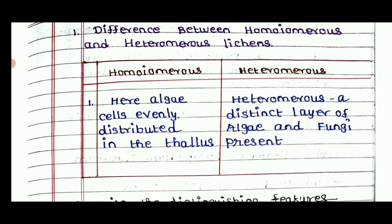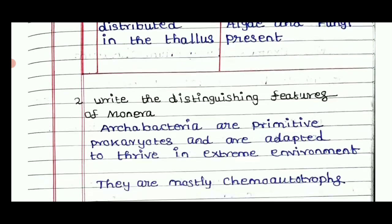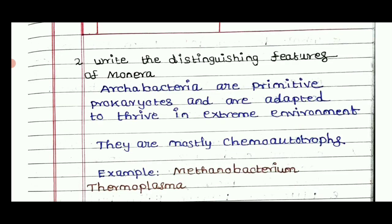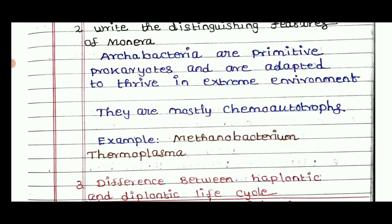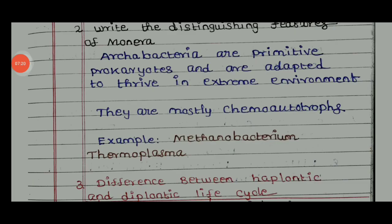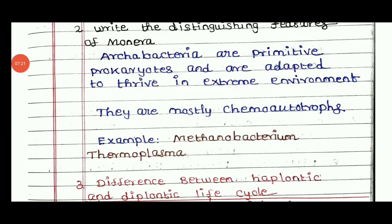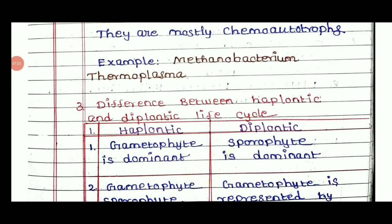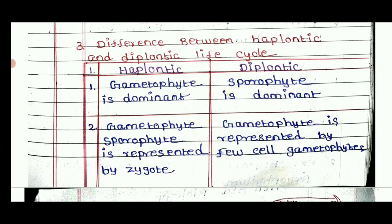So this is the way you can get the different features of Monera. Archaebacteria are primitive prokaryotes adapted to thrive in extreme environments. They are mostly chemotrophic. So two marks here. For example: Methanobacterium, Thermoplasma. The difference between haplontic and diplontic cycle — you can get two marks or three marks here.